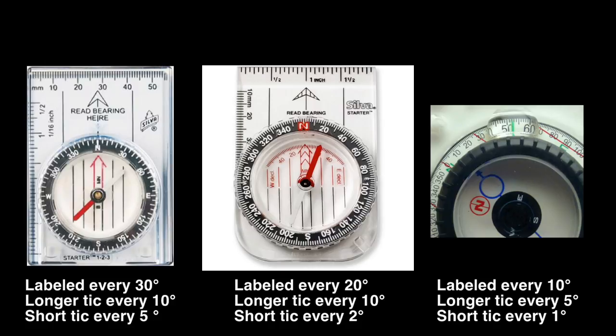On the other end, here's a low-cost compass. The dial is labeled every 30 degrees, it has longer tick marks every 10 degrees, and a tick only every 5 degrees.